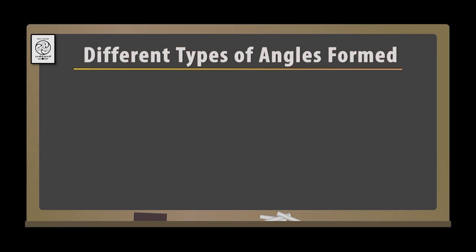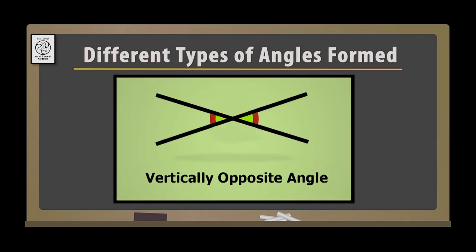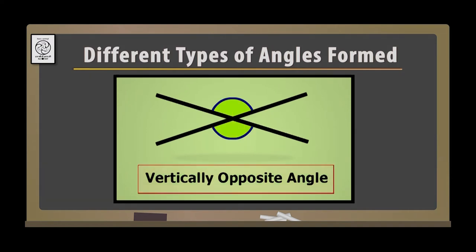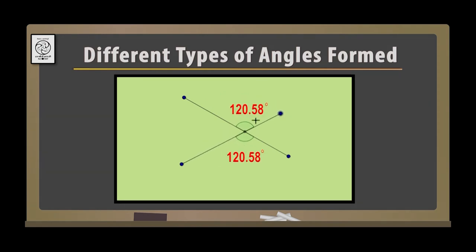Next we have the concept of different types of angles formed. Here we have two lines intersecting. When these two lines intersect, these two angles are known as vertically opposite angles and they are always equal. If you check it out, we can change this angle — you will find that the angle on top and the angle below remain exactly equal. So these are called vertically opposite angles.